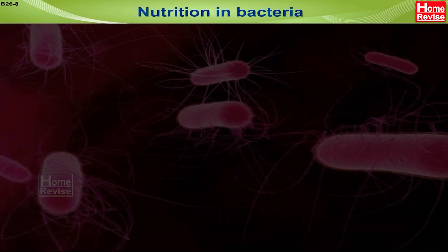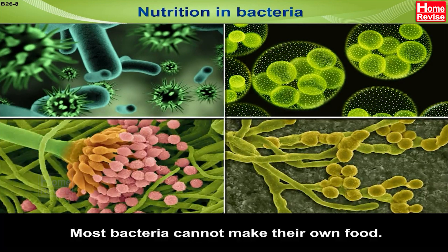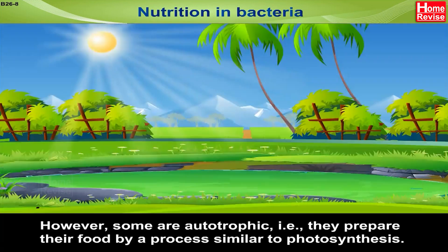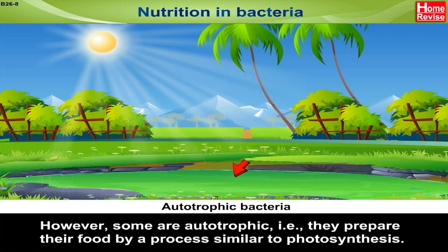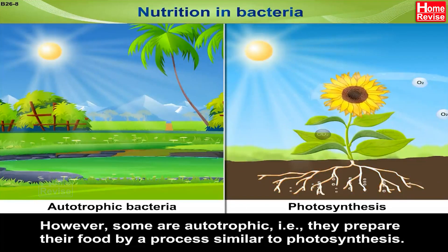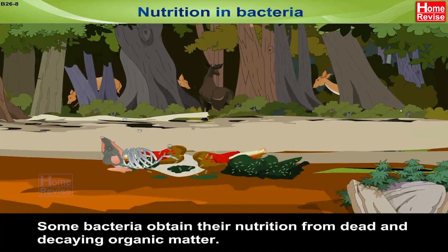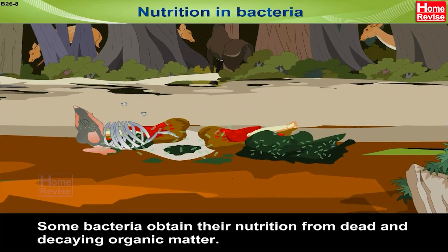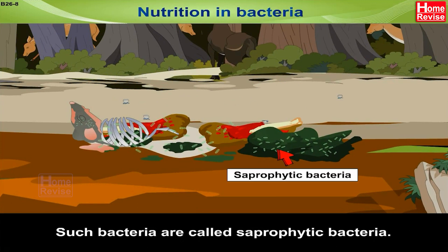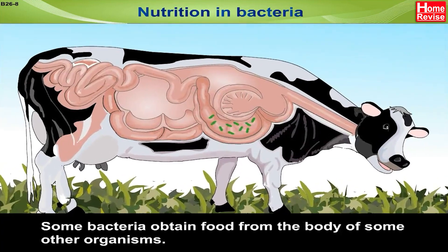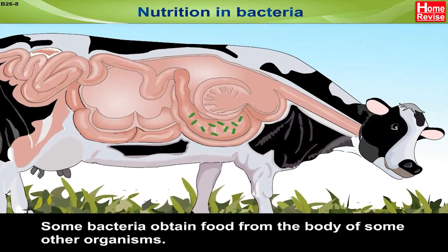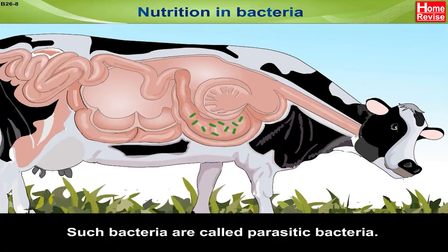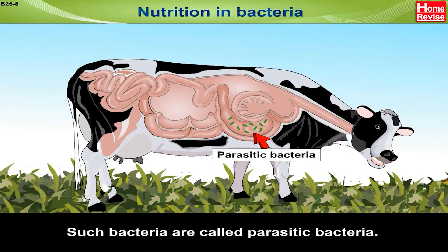Nutrition in Bacteria: Most bacteria cannot make their own food. However, some are autotrophic - they prepare their food by a process similar to photosynthesis. Other bacteria obtain their nutrition from dead and decaying organic matter; such bacteria are called saprophytic bacteria. Some bacteria obtain food from the body of other organisms; such bacteria are called parasitic bacteria.